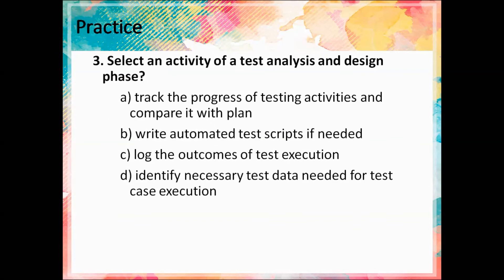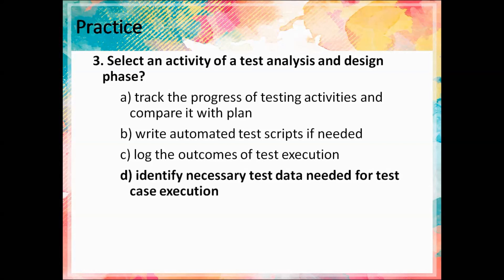Third question: select an activity of the test analysis and design phase. A — Track the progress of testing activities and compare it with the plan: this is the test control phase, so it's not true. B — Write automated test scripts if needed: this is the test implementation phase, so it's false. C — Log the outcomes of test execution: this is the test execution phase, so false. D — Identify necessary test data needed for test case execution: this is the test analysis and design phase, so the correct answer is D.